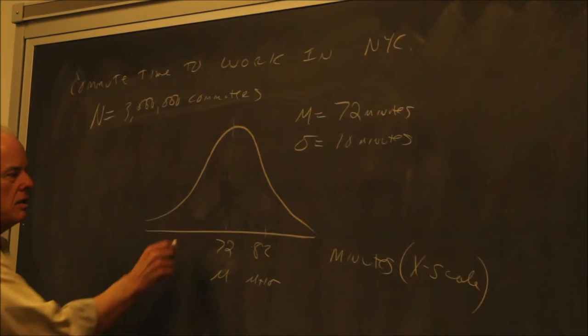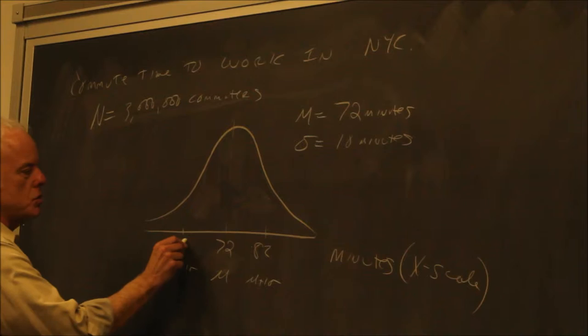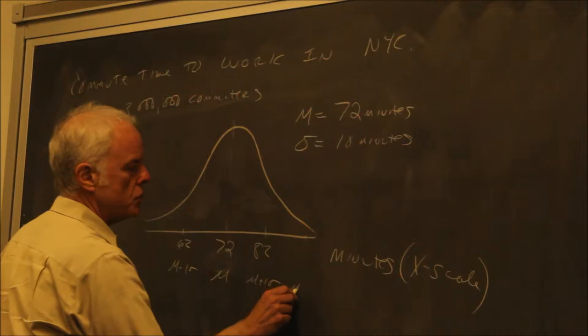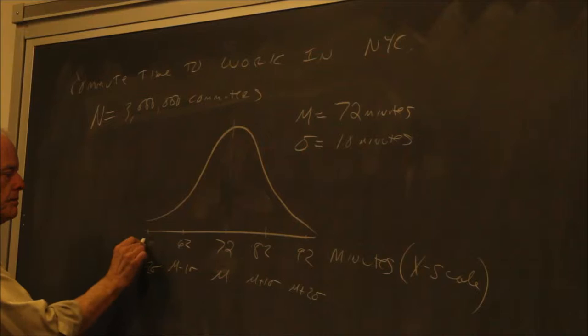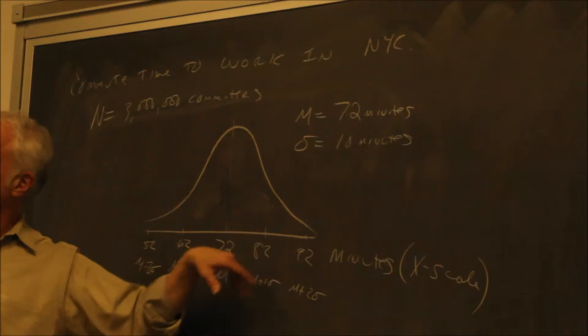If I go one standard deviation to the left, that's mu minus one sigma, which is 62 minutes. Two standard deviations to the right — mu plus two sigma — would be 92 minutes. And mu minus two sigma would be 52 minutes. All we did here was plot some points along the curve.